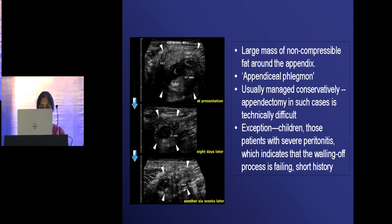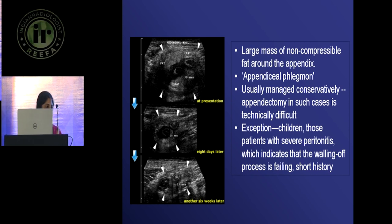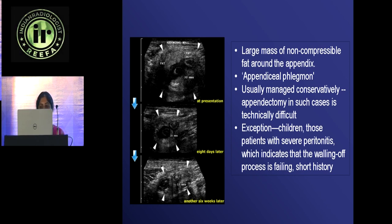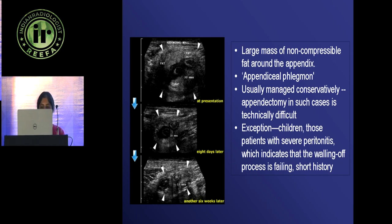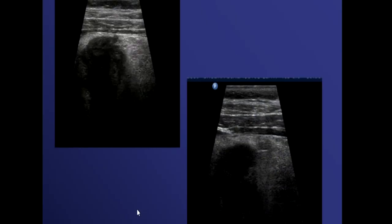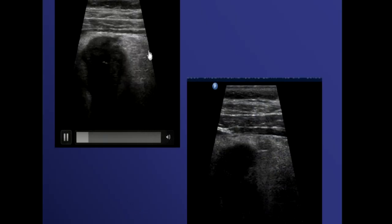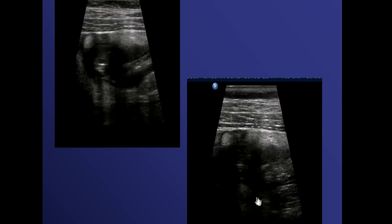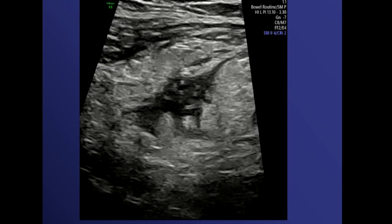An appendicular lump or phlegmon is a large mass of non-compressible fat around the appendix, usually managed conservatively because appendicectomy is technically difficult. Exceptions include children with severe peritonitis where the walling-off process is failing — those patients are operated to prevent septicemia. You see a fatty mass with clumped bowel loops and appendiceal inflammation. It is important to diagnose on ultrasound whether it is perforated, has formed a lump, or is just acute appendicitis.